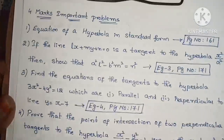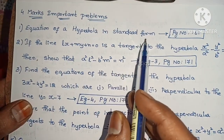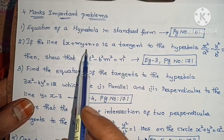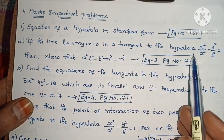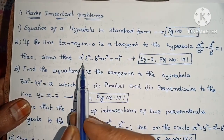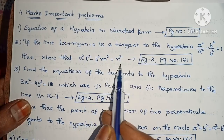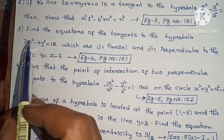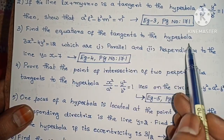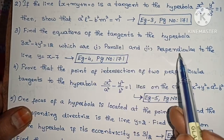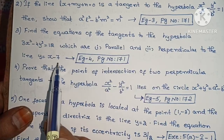That covers the 2-mark important problems. Next, the 4-mark important problems: First one, show the equation of a hyperbola in standard form. Page number 161. Next, if the line lx + my + n = 0 is a tangent to the hyperbola x²/a² − y²/b² = 1, show that a²l² − b²m² = n². Example 3, page number 171. Find the equations of the tangents to the hyperbola 3x² − 4y² = 12, which are first parallel and second perpendicular to the line y = x − 7.